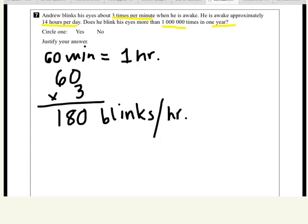Okay, and we know that he's awake approximately 14 hours in a day. So, now what? Why are we multiplying 180 times 14? Because he blinks 180 times in one hour, and then there are 14 hours. Good, excellent.